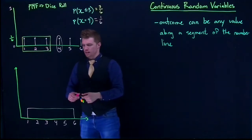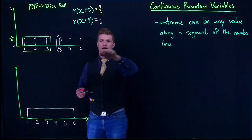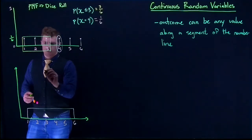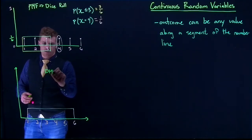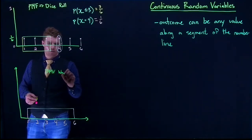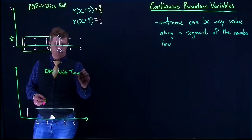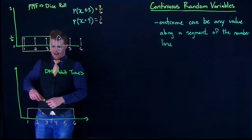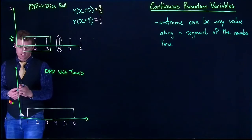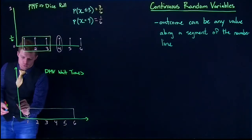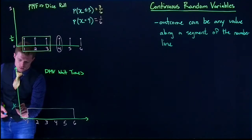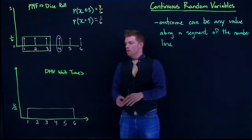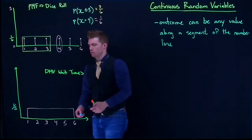So discrete values versus continuous — that's the key difference. Let's label this graph as DMV wait times. The height of this rectangle is not 1/6 — it's actually going to be 1/5. We'll dive into why that's the case in the uniform video, but for now just note that the height is 1/5.